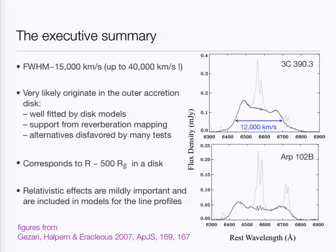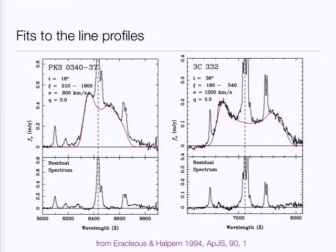After the narrow lines have been subtracted, you can see the double-peaked structure. There's a series of arguments and observational tests done over the past 20 years suggesting strongly that the origin of these lines is the outer accretion disk, at distances of a few hundred to maybe one or two thousand gravitational radii from the center. The lines are skewed and asymmetric, making it necessary to include relativistic effects in the calculations of the line profiles. The red line shows a model that attributes the line emission to an annulus in the disk — a range of radii differing by a factor of two — with power-law emissivity in radius and relativistic effects included in the weak field approximation. The fit is very good.